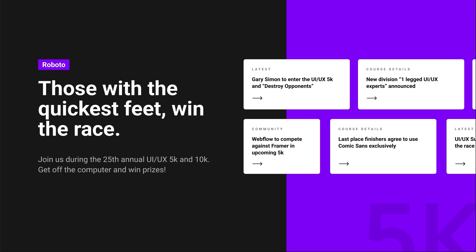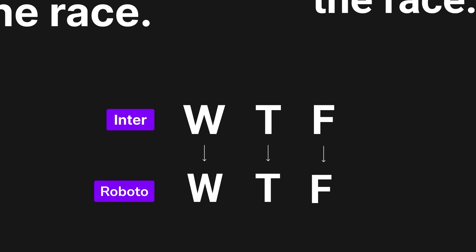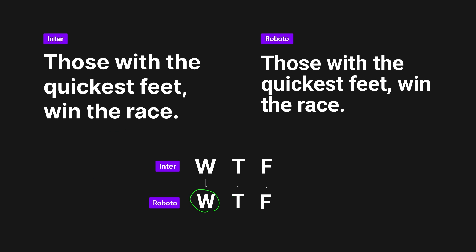Next up is Roboto. This font has been around and in popular use for a long time. It's not quite as thick as Inter in terms of font weight, but this one is a little bit more condensed. The W here is definitely a little bit more wide in Inter compared to Roboto. Overall, it's a slightly more condensed font.